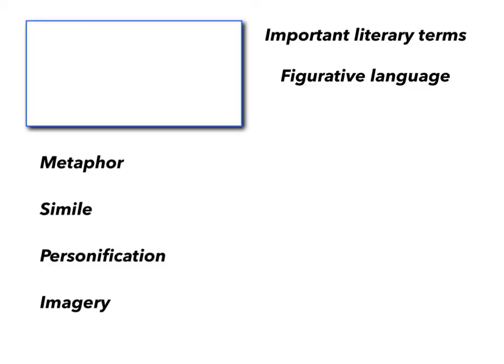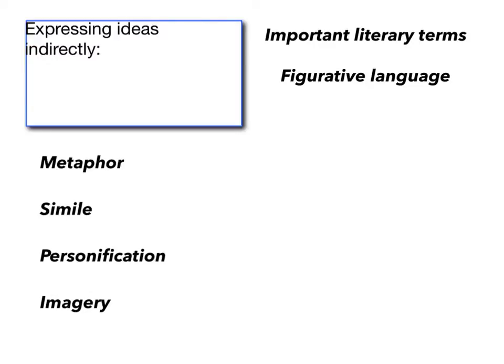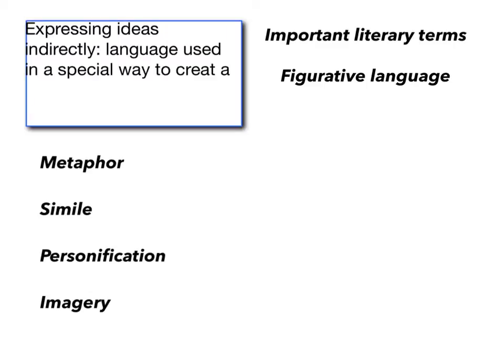The first set of literary terms we're going to look at are figurative language literary terms: metaphor, simile, personification, and imagery. Figurative language is expressing ideas indirectly, or language used in a special way to create a special effect.